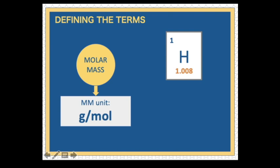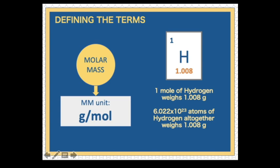Take note that the standard unit that we use for molar mass is gram per mole. In the periodic table, you will usually see the mass of a single atom of an element. In this example, the atomic mass of hydrogen atom is 1.008 atomic mass unit. The good news is, the numerical value of the atomic mass unit is the same as the molar mass. The only thing we need to change is the unit. So, from this, we can say that one mole of hydrogen weighs 1.008 grams. It also means 6.022 times 10 raised to the 23rd power atoms of hydrogen altogether weighs 1.008 grams per mole.